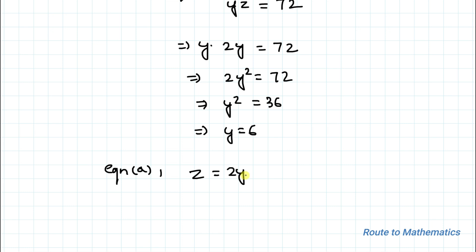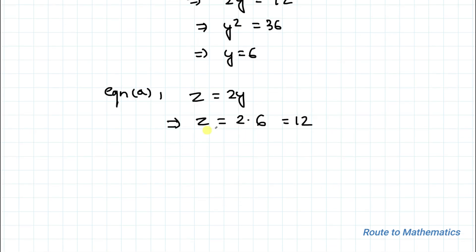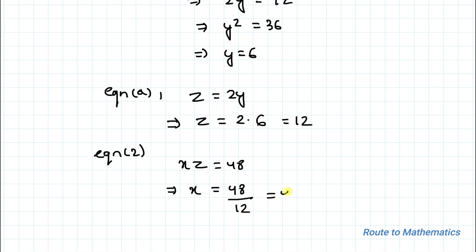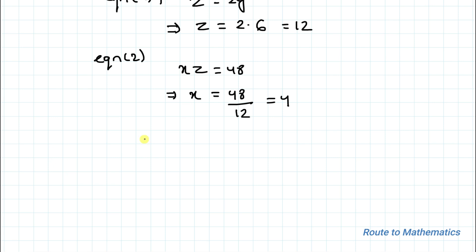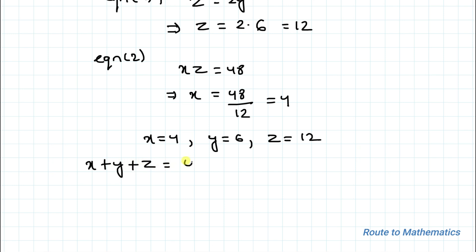From equation A, z = 2y, so substituting y = 6 gives z = 2 × 6 = 12. Now substituting z into equation 2: xz = 48, so x = 48 ÷ 12 = 4. Therefore x = 4, y = 6, z = 12, and x + y + z = 4 + 6 + 12 = 20. This completes the first method.